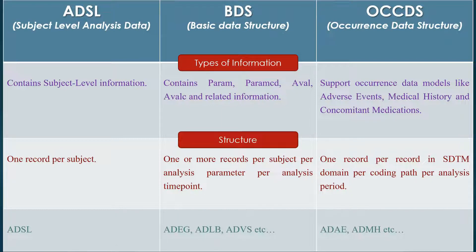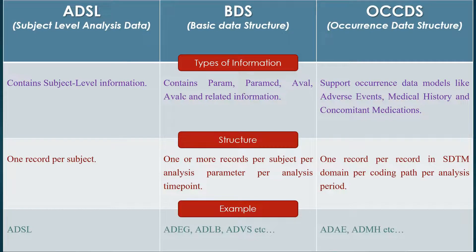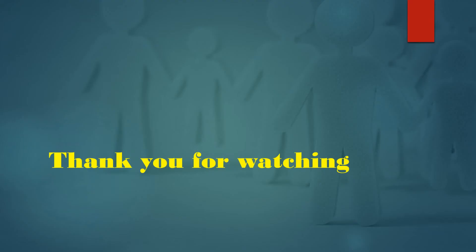Let's see some examples of each data structure. In ADSL structure it's ADAS dataset. In BDS structure we create datasets like ADEG, ADLB, ADVS, etc. In the Occurrence Data Structure it's datasets like ADAE, ADMH, ADCM. That's all about the data structure in ADaM. Thank you for watching the video.